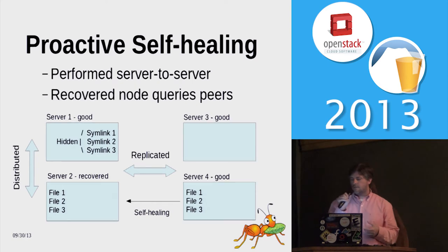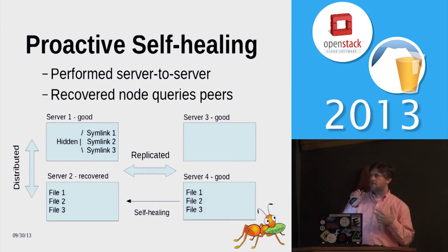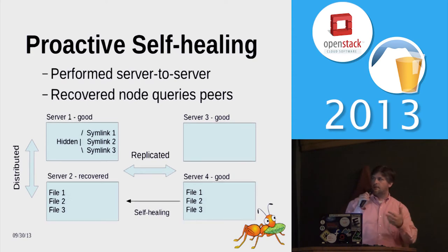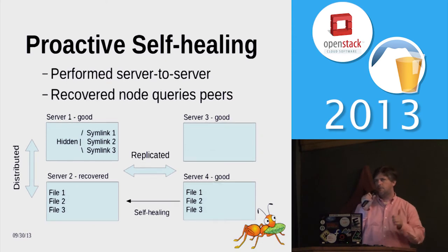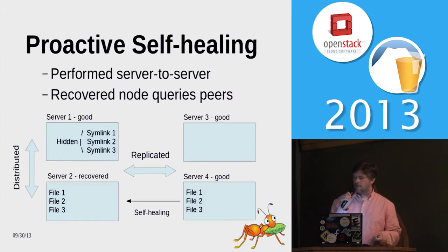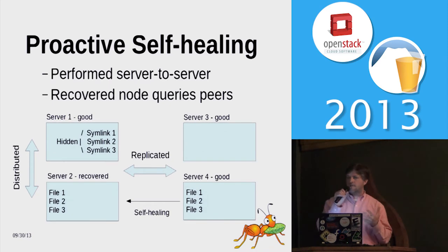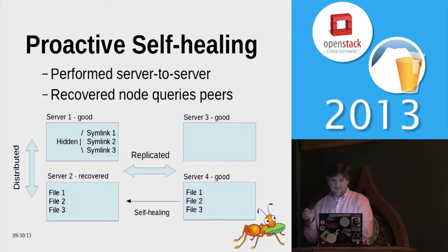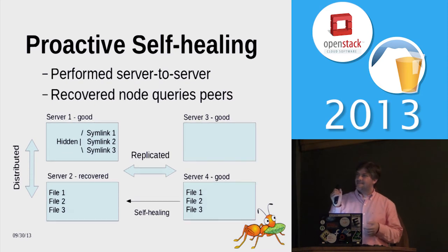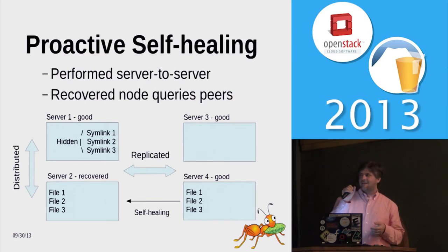This shows an overview of what proactive self-healing looks like, implemented in the 3.3 release. If a replicated set goes down, we keep a change log of what's changed since the other replica went down, so when it comes back online it pulls the good replica and the heal commences. There's a mistake on this slide — the distributed and replicated labels are backwards; it should actually be going the other way.